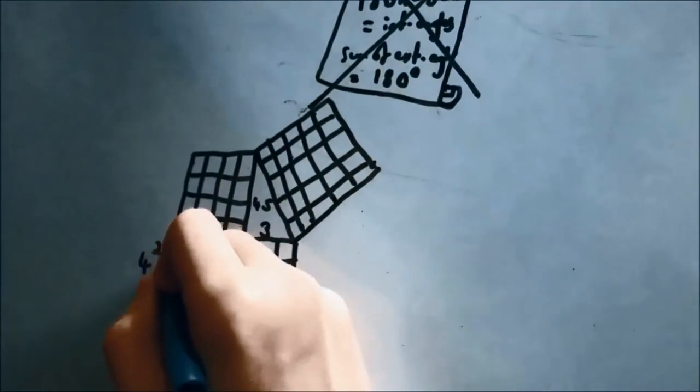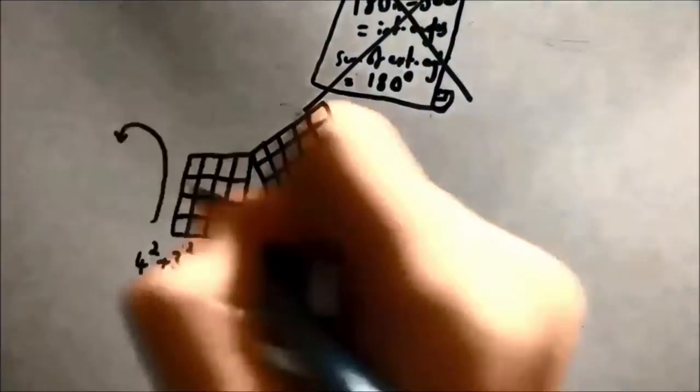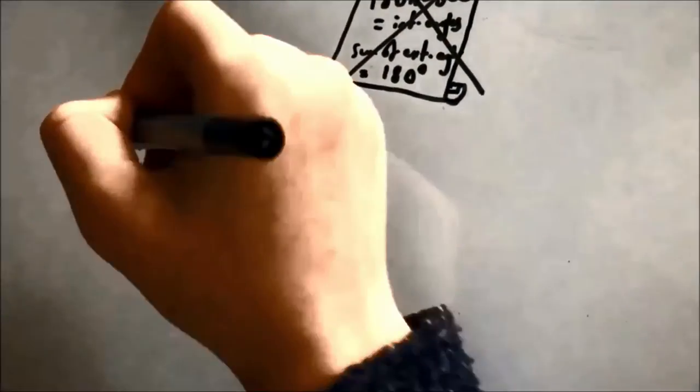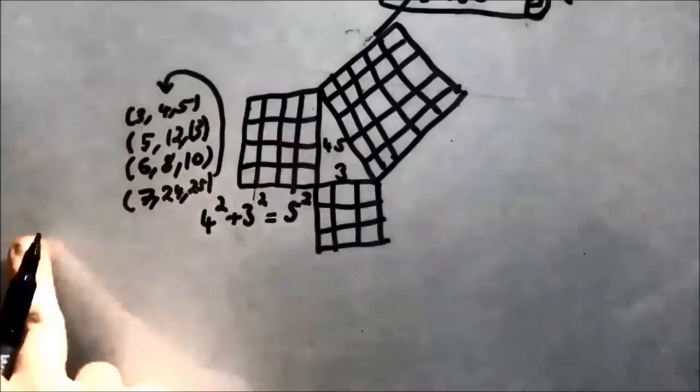a is commonly shown as 4, b as 3, and c as 5. This is known as a Pythagorean triple. There are many of these, for example 5, 12 and 13, and 6, 8 and 10.